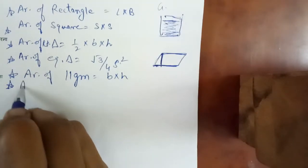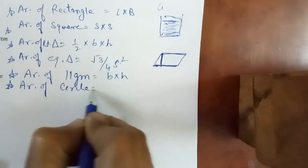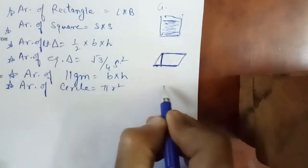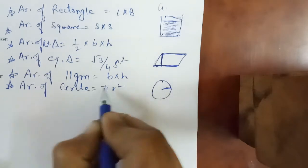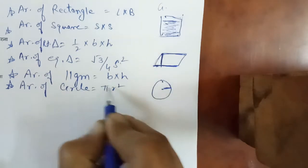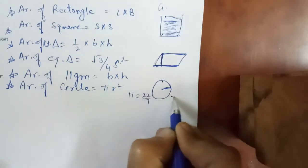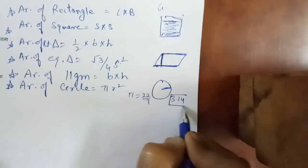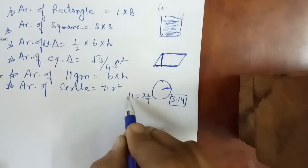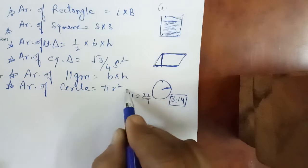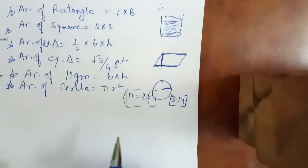Next formula is area of circle, that is π r square. Here r is for radius. π means its value is almost always 22 by 7, or sometimes 3.14. If 3.14 is given then use that; otherwise if no value is given, then π की value हमेशा 22 by 7 लेनी है.